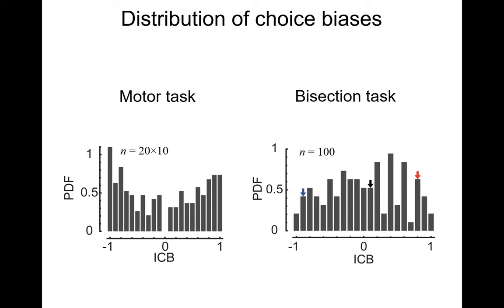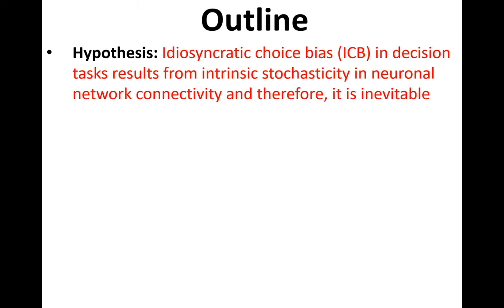This is a very different task and participants still exhibit choice bias. The hypothesis I will put forward is that these idiosyncratic choice biases result from intrinsic microscopic stochasticity in network connectivity in the network that makes decisions, and in that sense it is something inevitable. Choice bias is something that is what we would expect from a naive network.